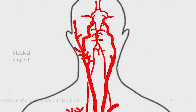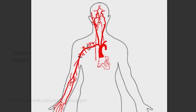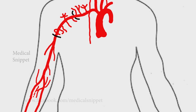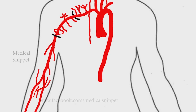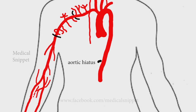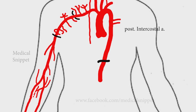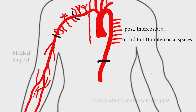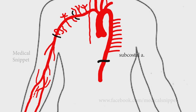Let's see the branches of the descending thoracic aorta. The descending aorta starts at the level of the fourth thoracic vertebral body as the continuation of the aortic arch. It exits the thorax by continuing as the abdominal aorta as it crosses the aortic hiatus in the diaphragm at the level of the twelfth thoracic vertebra. It gives rise to nine pairs of posterior intercostal arteries of the third to eleventh intercostal spaces. It also gives a pair of subcostal arteries and a pair of superior phrenic arteries.